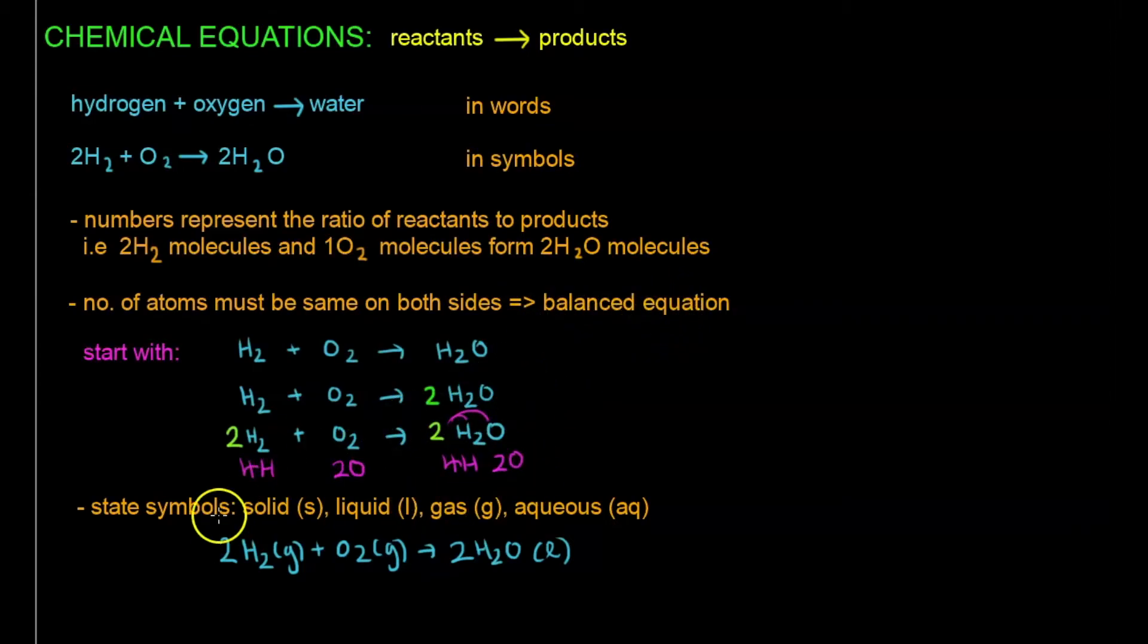And of course we have to include the state symbols, which is solid, liquid, gas, and aqueous. We'll talk about aqueous next in the ionic equation, but for now we are very familiar with solid, liquid, and gas, and in this case we can assign them easily. H2 is a gas, O2 is a gas, H2O is liquid, and we write them as such.